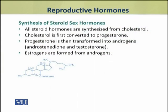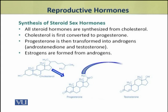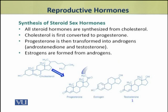The steroid sex hormones are synthesized from cholesterol. Cholesterol is the parent molecule from which all steroid hormones are made. Cholesterol is then transformed into androgens, such as testosterone and androstenedione. Androgens are next converted into estrogens. So the pathway is: cholesterol → progesterone → androgens → estrogens.